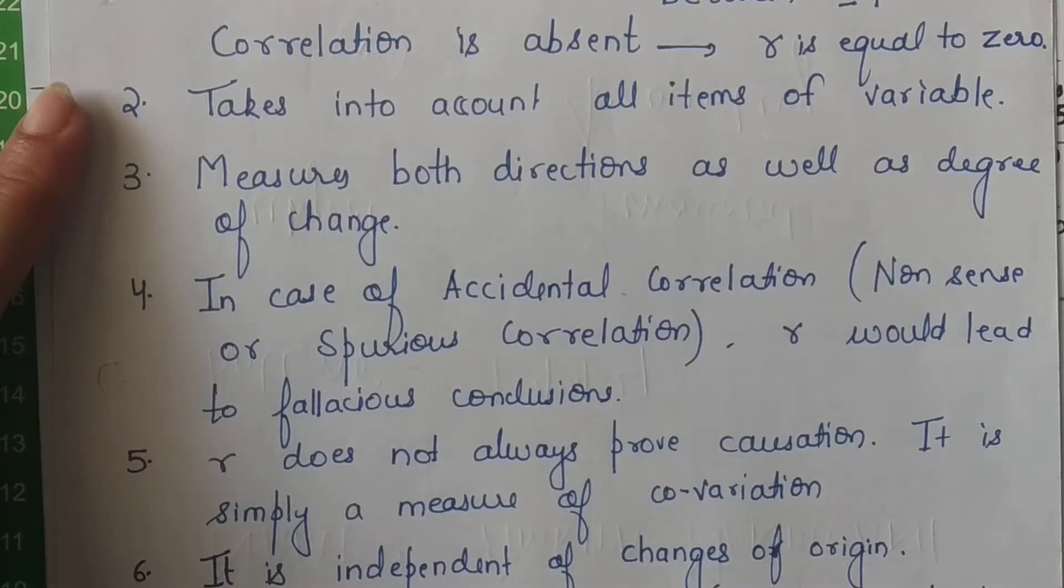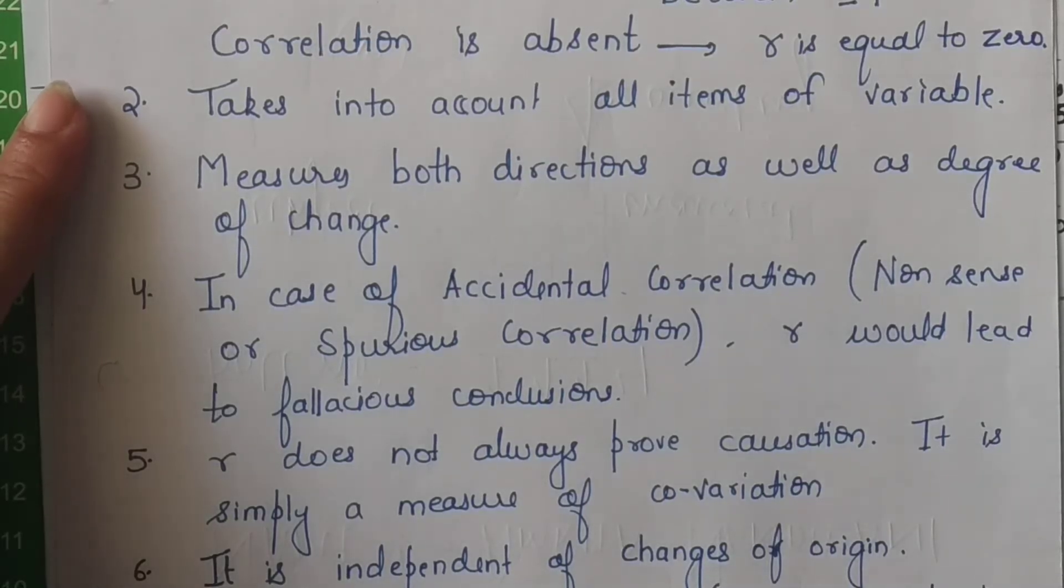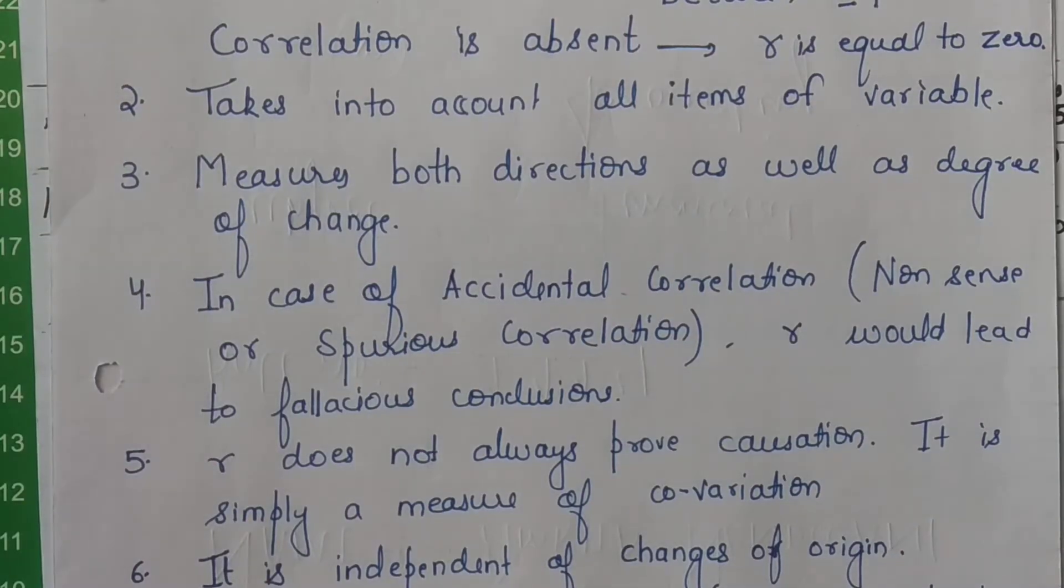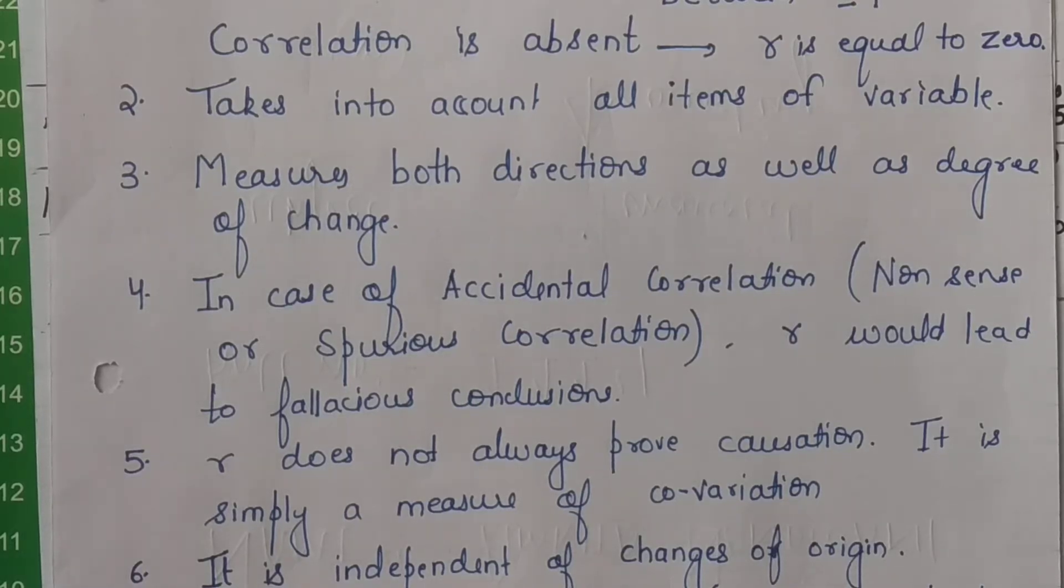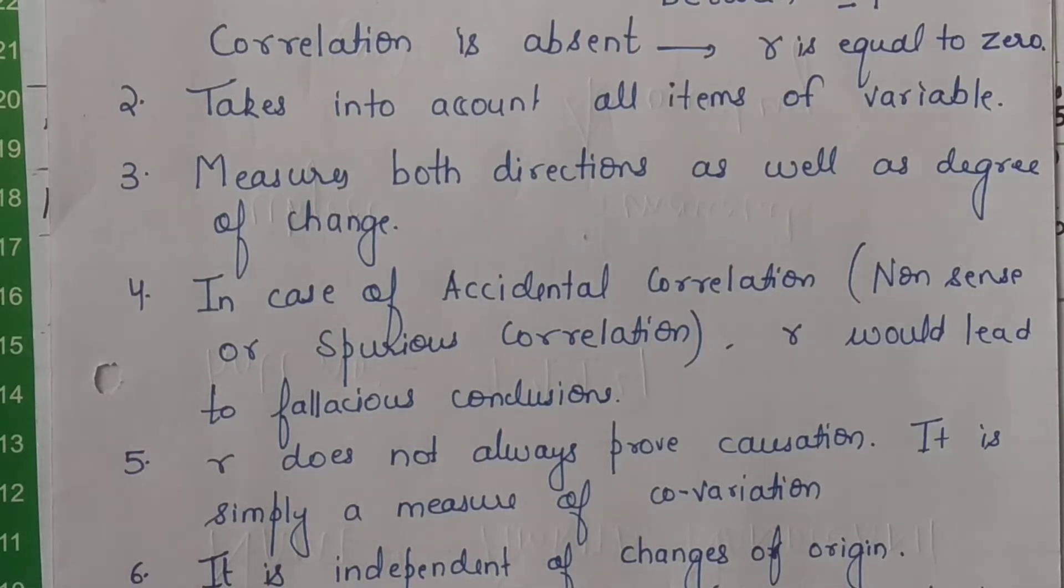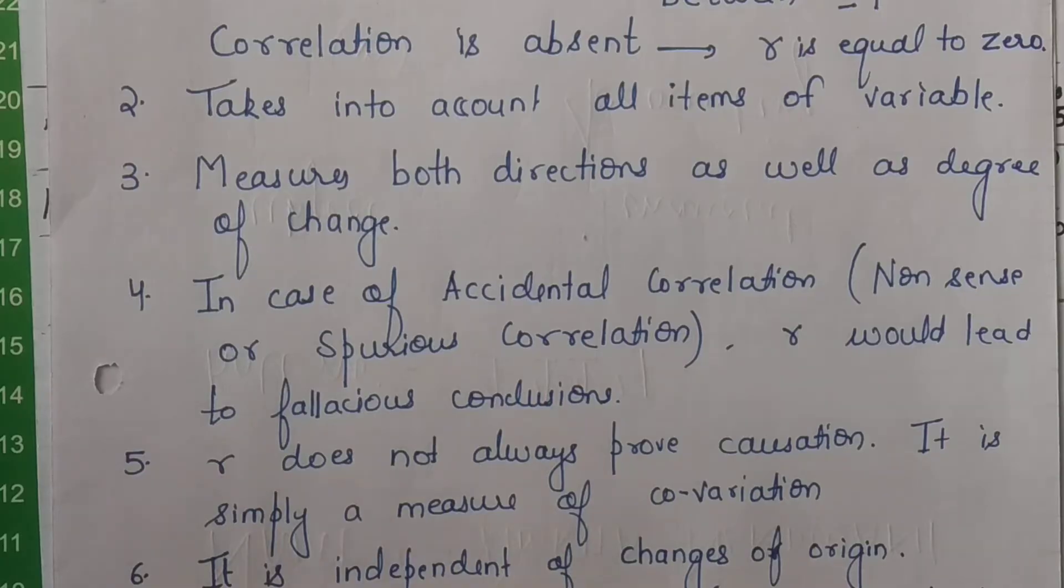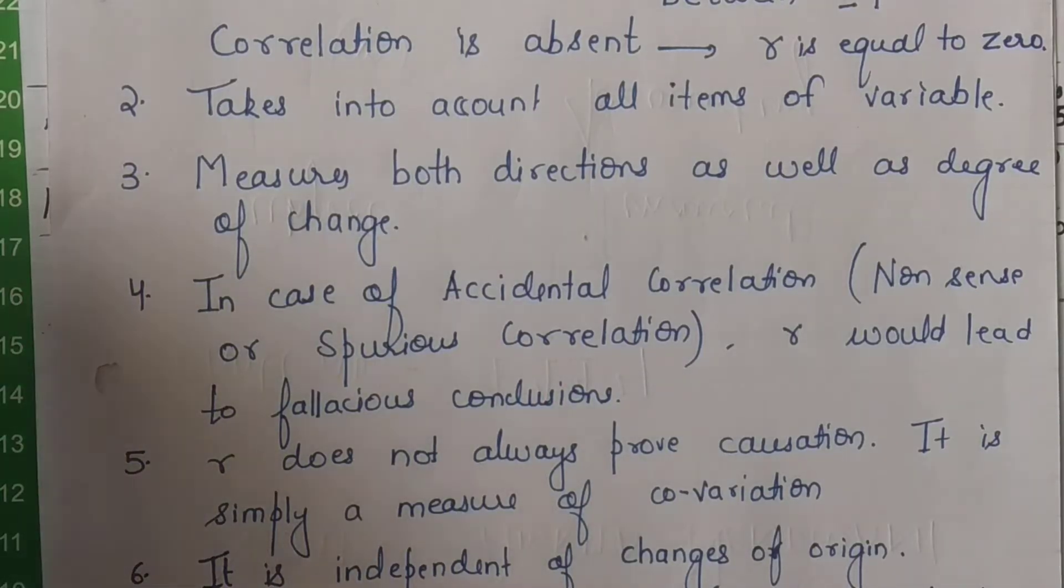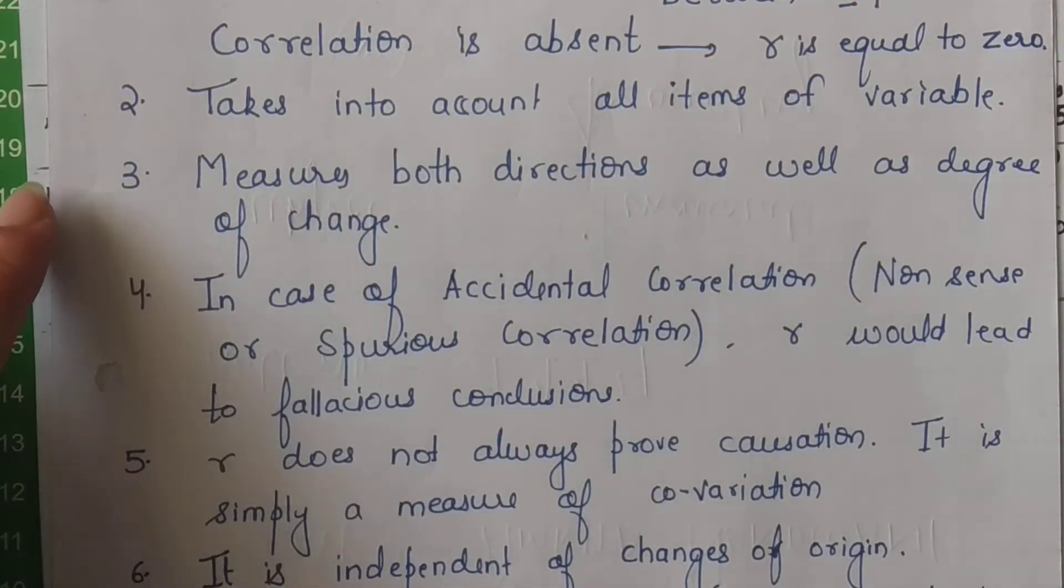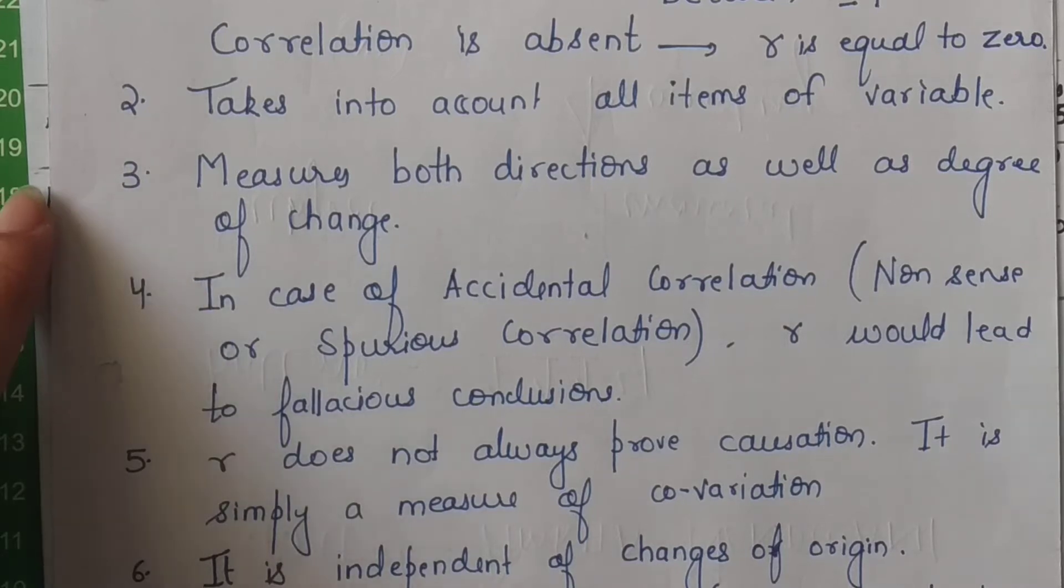Agar main kehun ki ek taraf the number of earthquakes are rising and ek taraf the cases of covid are also rising. The values of the number of cases rising in a week or in a month of covid-19 and the number of earthquakes or the number of fire accidents happening somewhere in the country. Do you think there is any relationship? No.